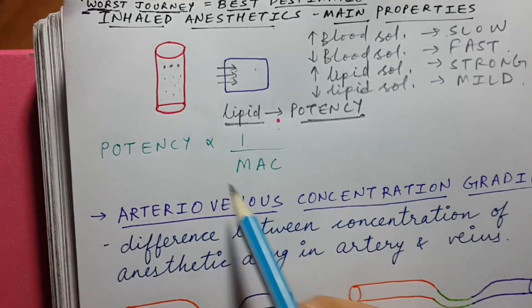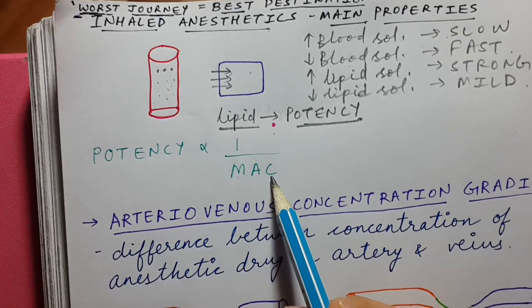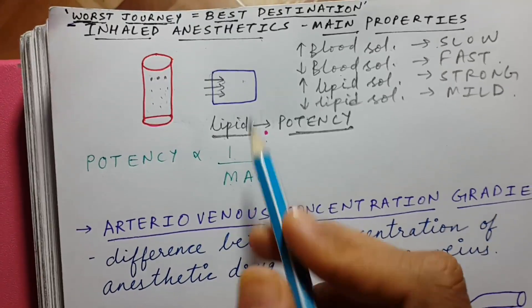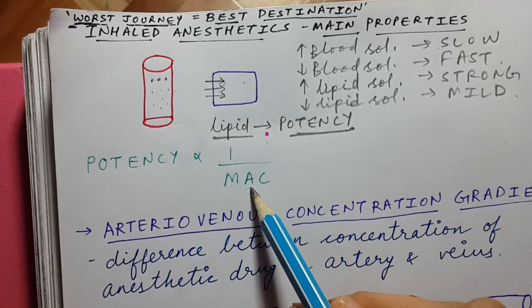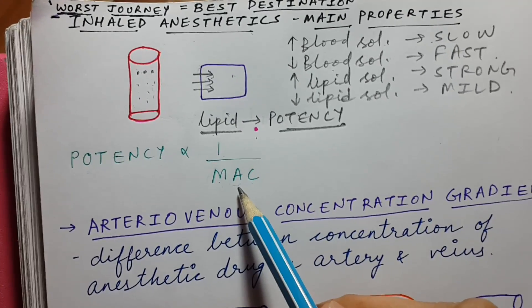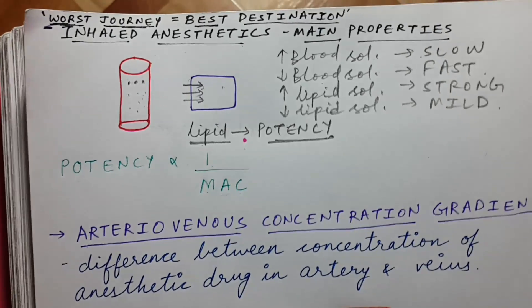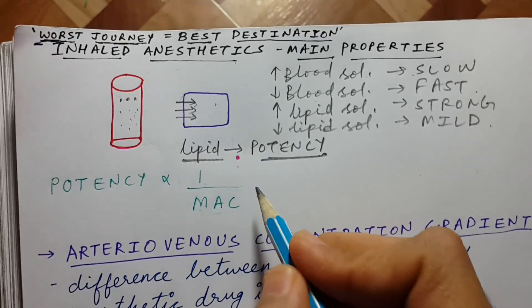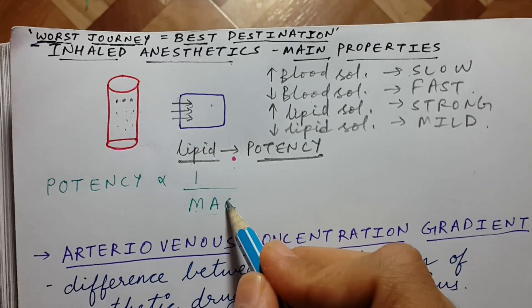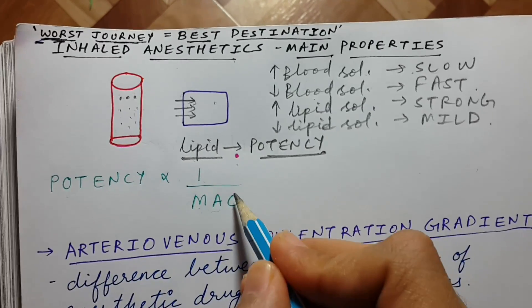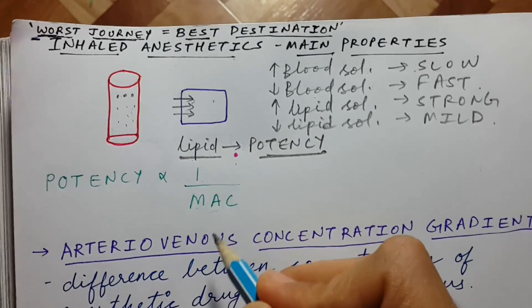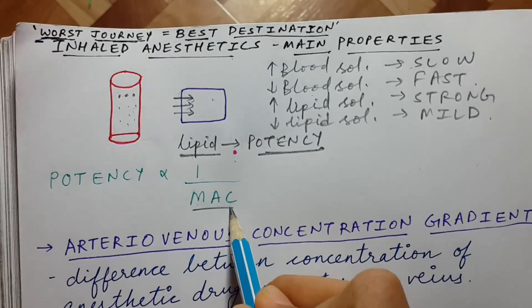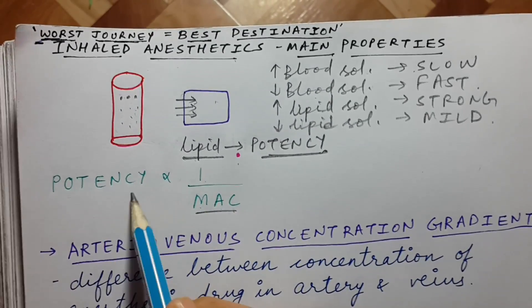Potency is inversely proportional to minimal alveolar concentration (MAC). MAC is the concentration of anesthetic in the alveoli required to produce its effect in 50% of patients — meaning 50% of patients will not respond to any painful stimulus.